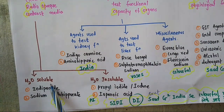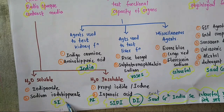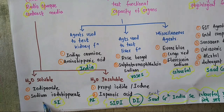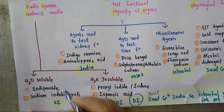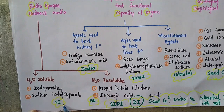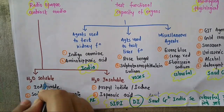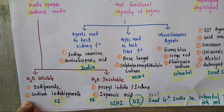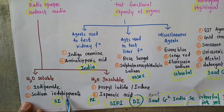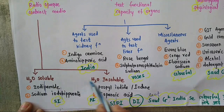Water soluble examples are represented by 'SI': S stands for sodium iodohippurate, and I stands for iodipamide. So the water soluble Radio Opaque Contrast Media examples are sodium iodohippurate and iodipamide.